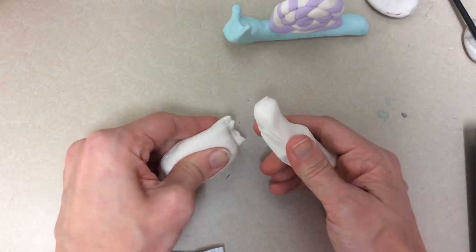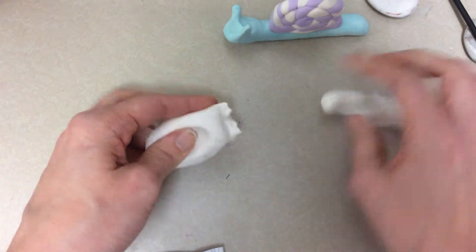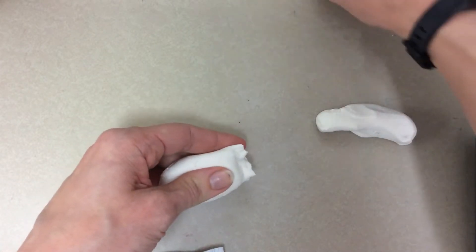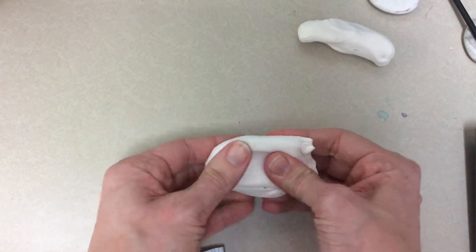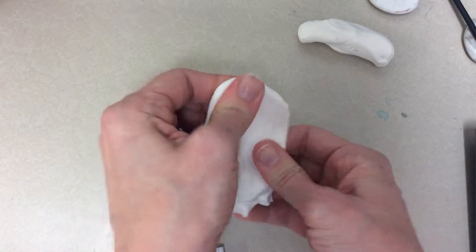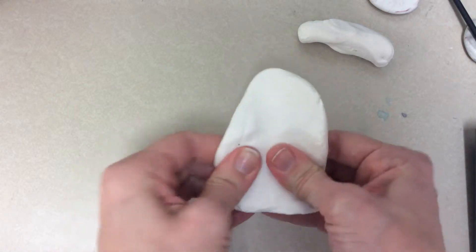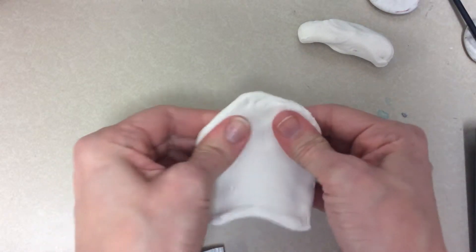The first part is going to be your snail body. So the second part will be the shell, and we'll talk about dividing that into separate colors later. But to just add color to any piece of Model Magic, first you want to flatten it out.